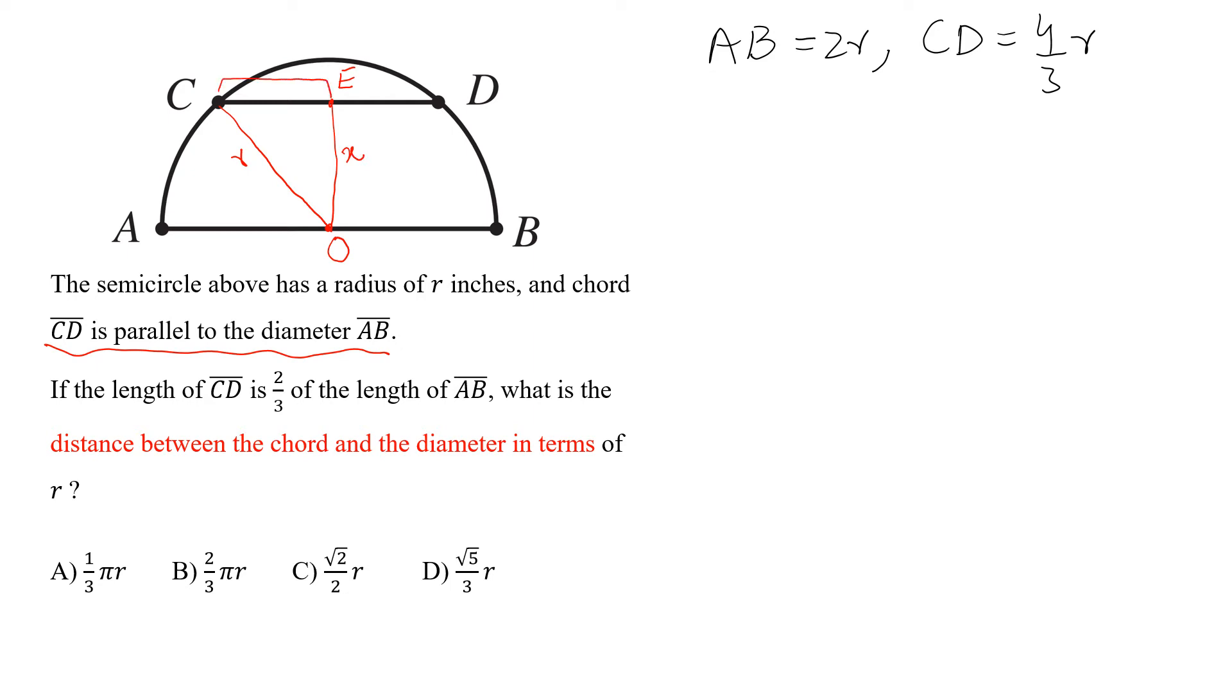And CE is half of CD. CE is half of CD. And CD is 4/3 of r, so this is 4/3 of r. We cancel 4 with this 2.